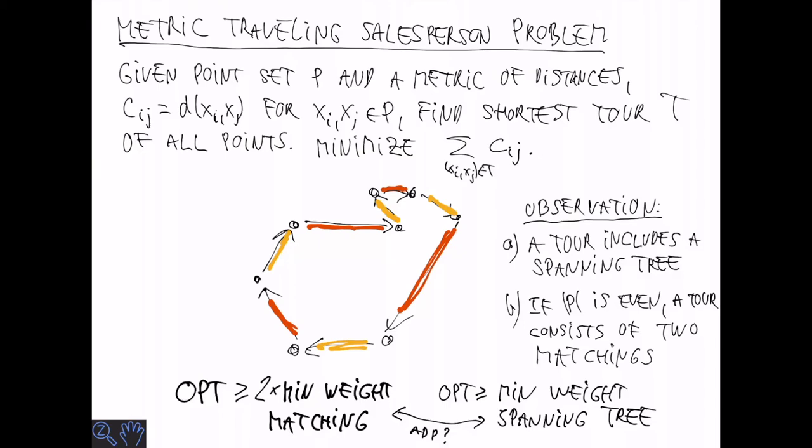So if we could somehow add a minimum weight matching and a spanning tree, we would get a three-half approximation.